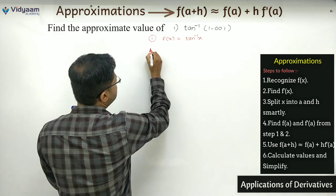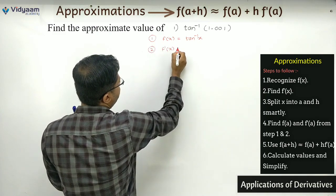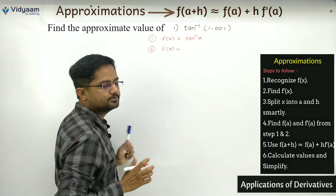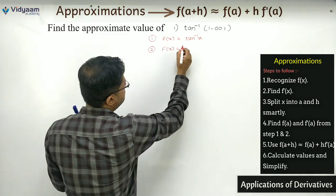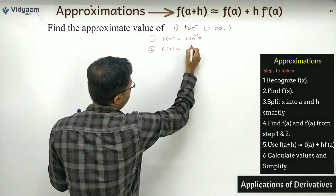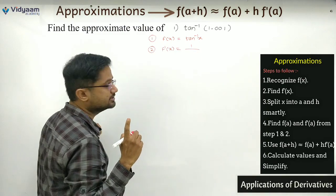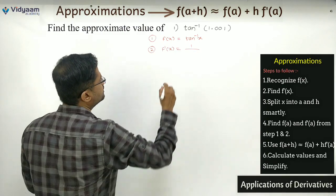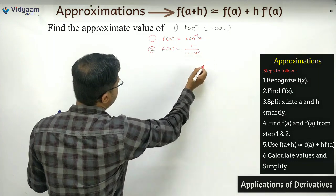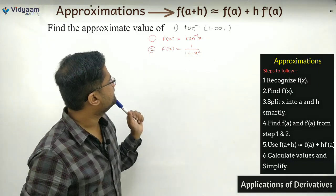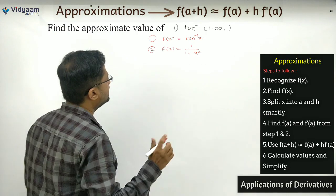As soon as I get this, in step 2 I know what to do — find the derivative of f(x). So f'(x) of tan inverse of x — do you remember? It is 1 upon (1 + x²). So step 1 and step 2 are now clear for us.